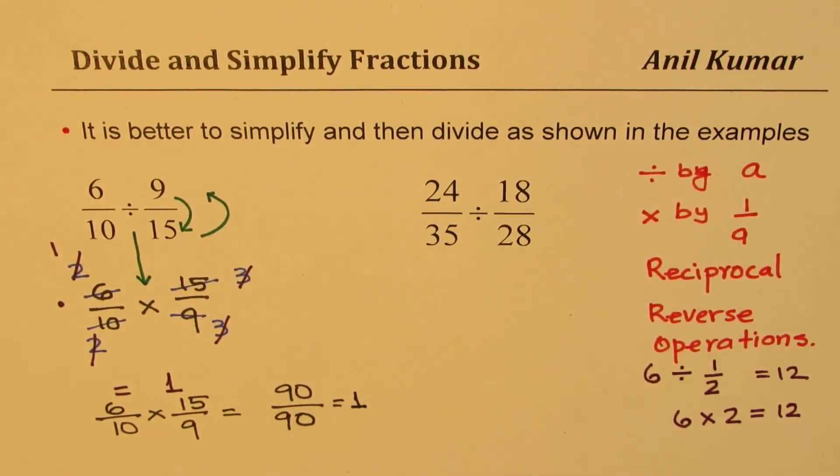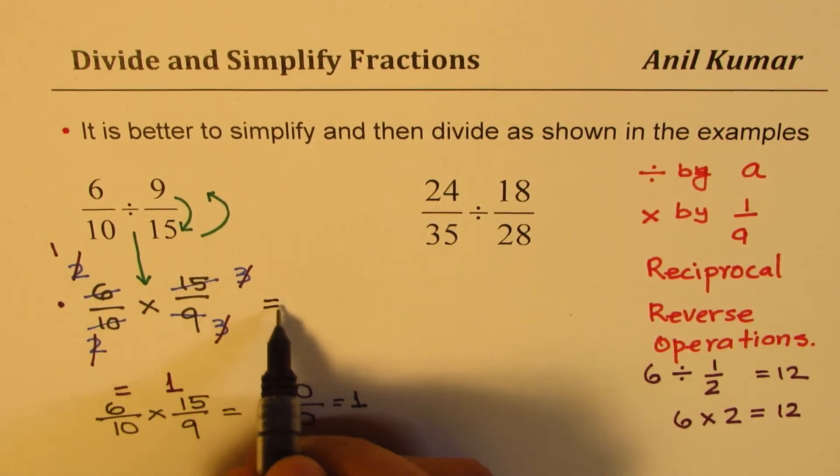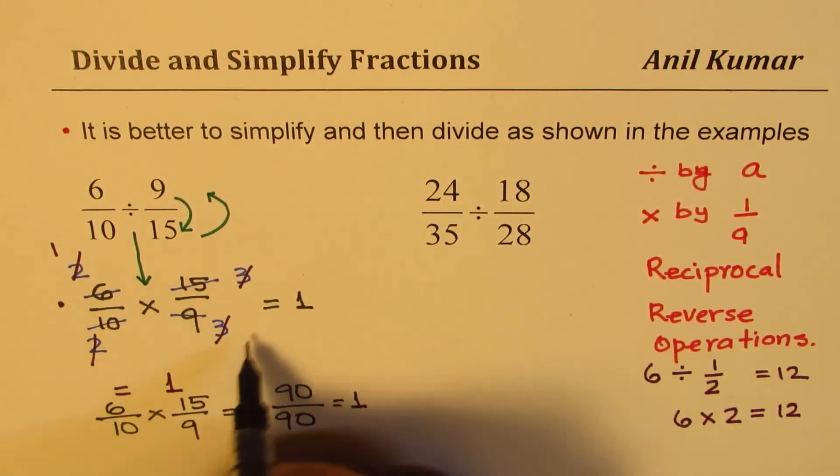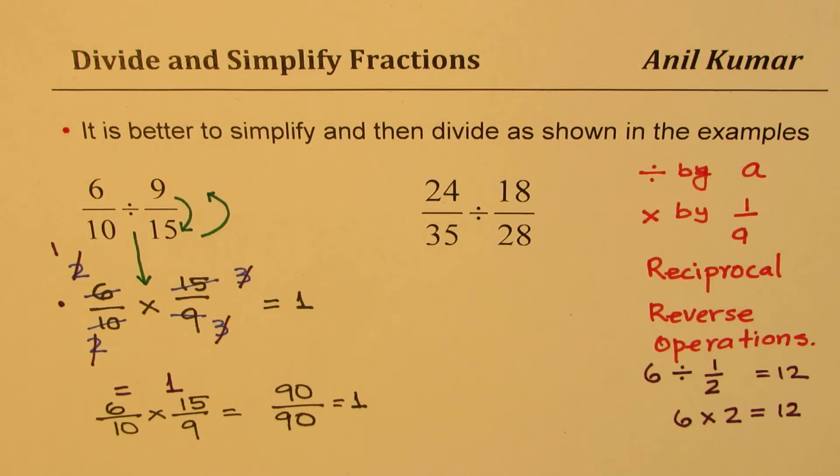We would have got 1. Do you see that? So the same answer we got by simplifying—we did not have to multiply such big numbers. Perfect. So you see how by simplifying first we can easily do division of fractions, correct?